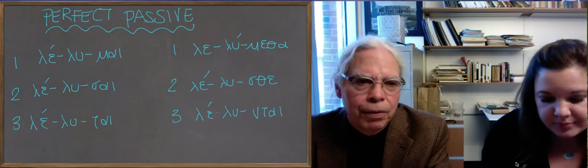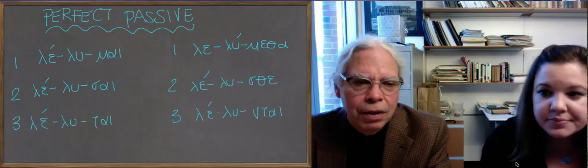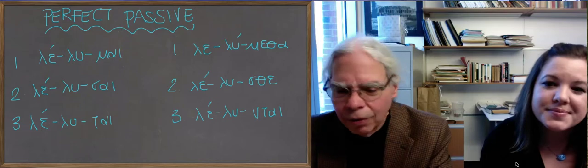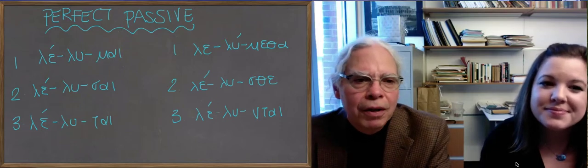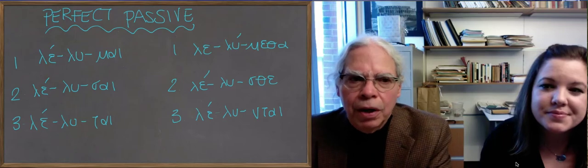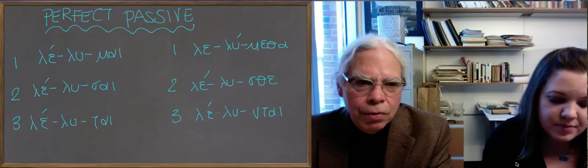So we put up the perfect passive of luo. It's easy to write. And you can see that this is our most beautiful systematic form ever. What is it that typifies it? Well, you've got the reduplication, so you've got le added on in front of the lu.